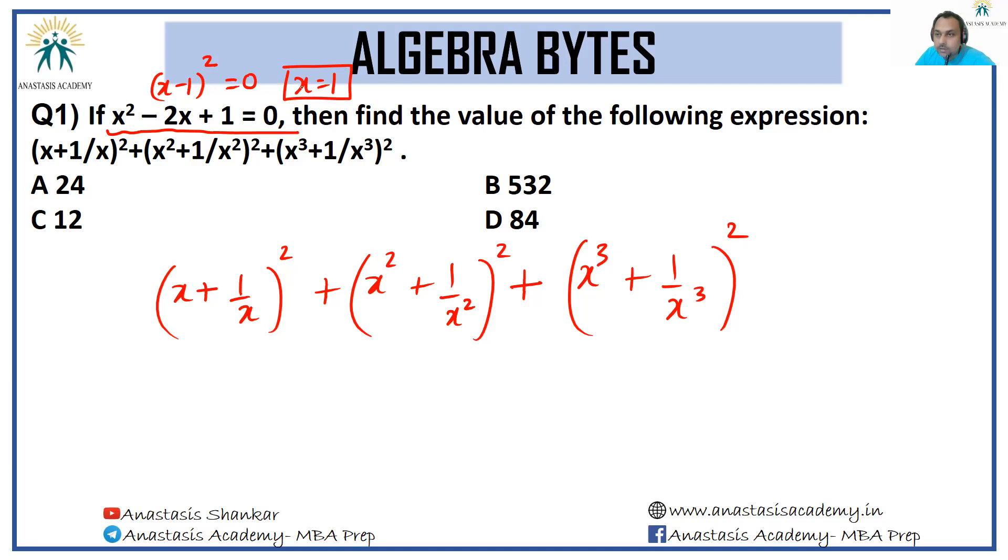As soon as you reach this conclusion x = 1, can you see x + 1/x is 2 squared. x² is 1, 1/x² is 1, this is 2 squared. x³ is 1, 1/x³ is 1, this is 2 squared. So 4 + 4 + 4, answer is 12.